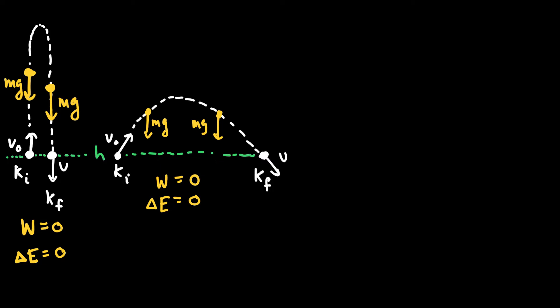When the work done by a force is independent of the path taken and depends only on the initial and final positions — as shown in these two examples — those types of forces are called conservative forces. The best example of a conservative force is the gravitational force.